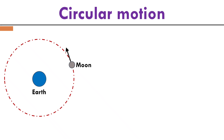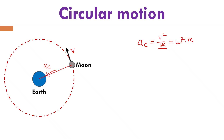Let's look at the last example: the moon orbiting Earth. Because the moon is moving in a circle, it has acceleration pointing to the center — which is Earth. The centripetal acceleration equals v² divided by r, or ω² times r. Here, r is not the radius of Earth or the moon; it is the distance from the moon all the way to the center of Earth.